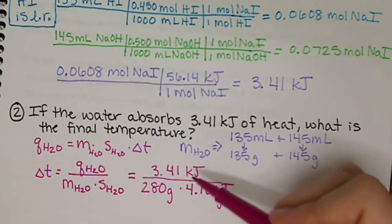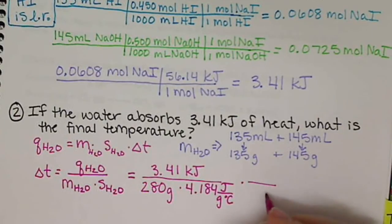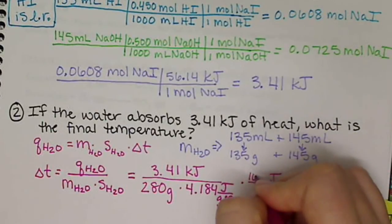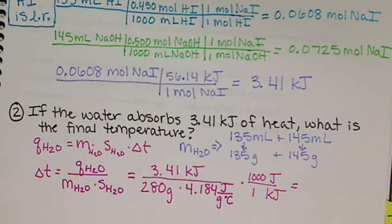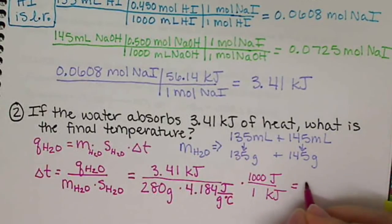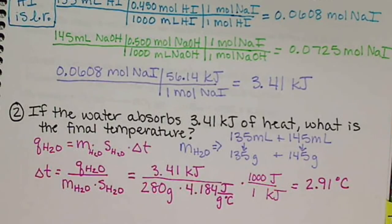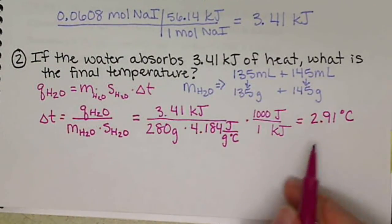Be careful with your units — we have kilojoules on top and joules on the bottom, so we want to convert. We need joules on top, so we use 1,000 joules per kilojoule. My change in temperature ends up being 2.91 degrees Celsius, so I know that my temperature is going to increase by 2.91 degrees Celsius.